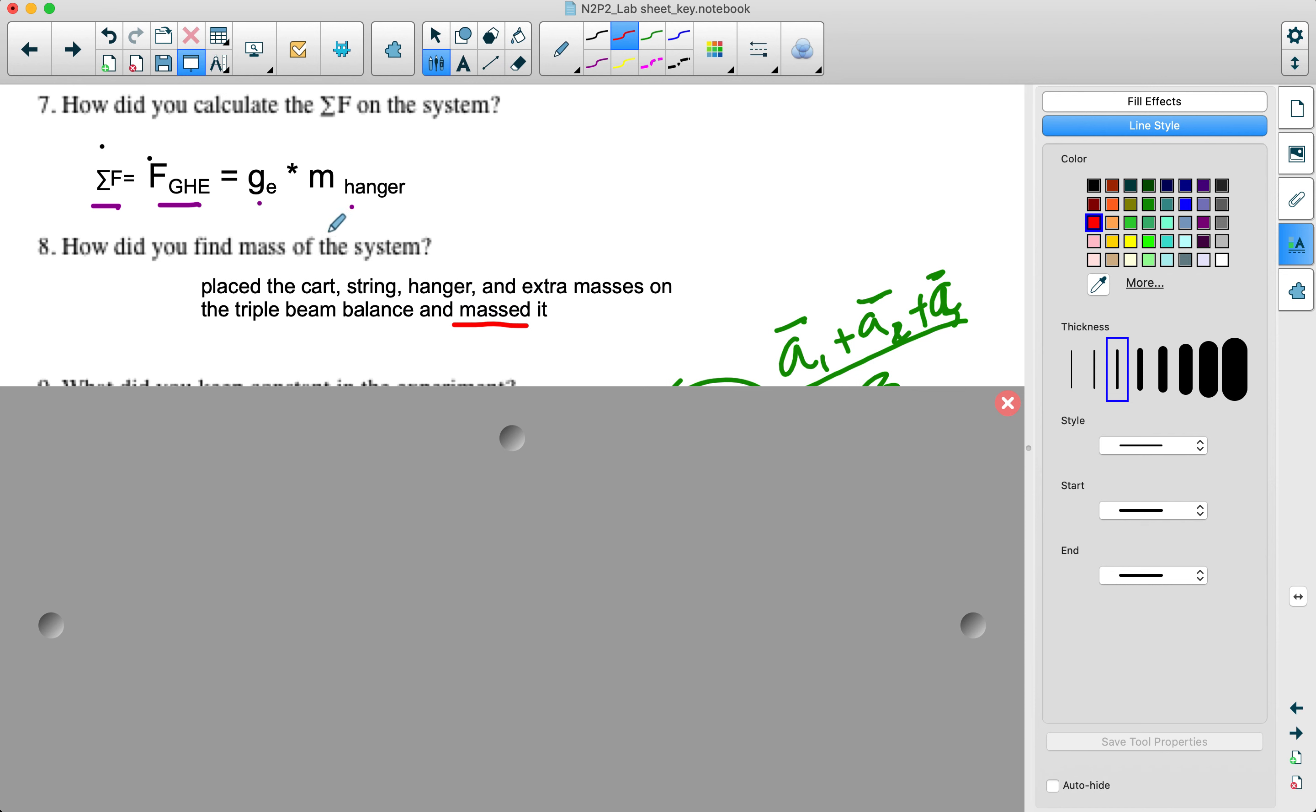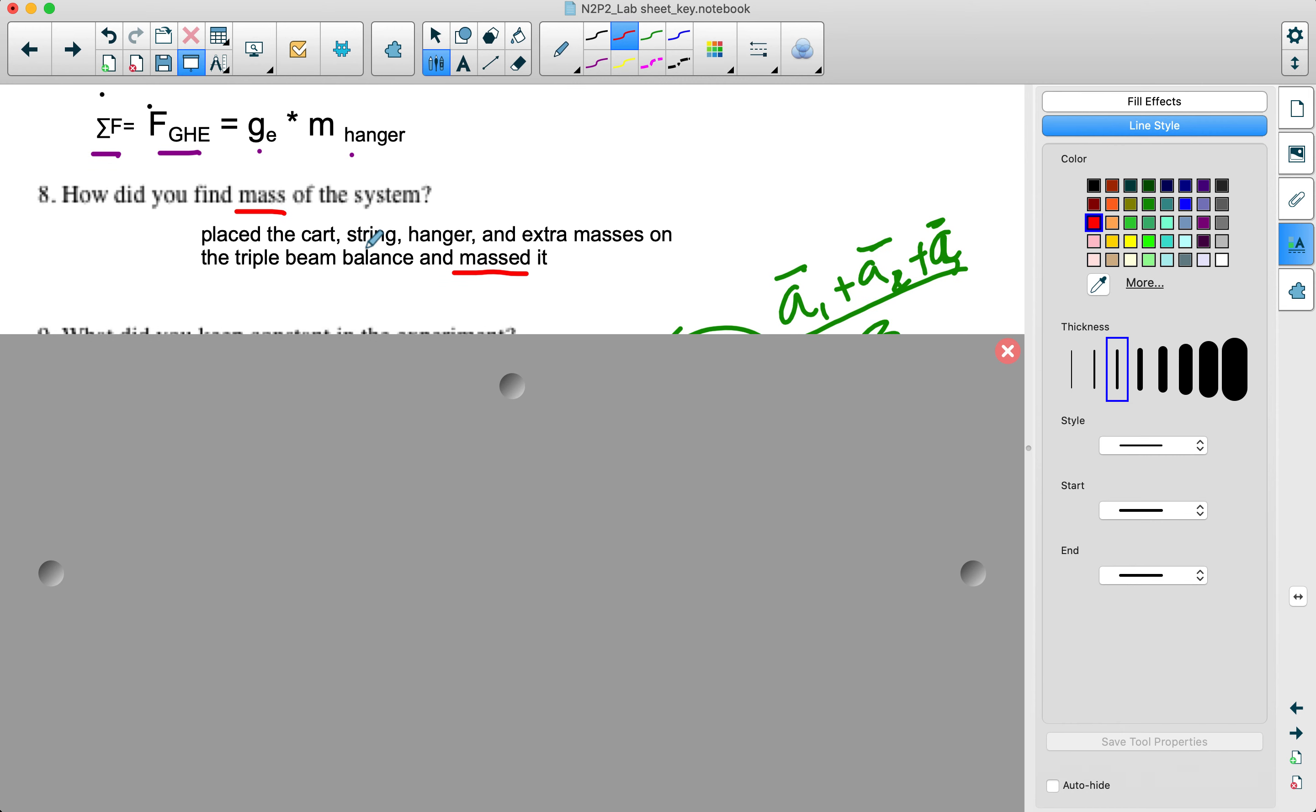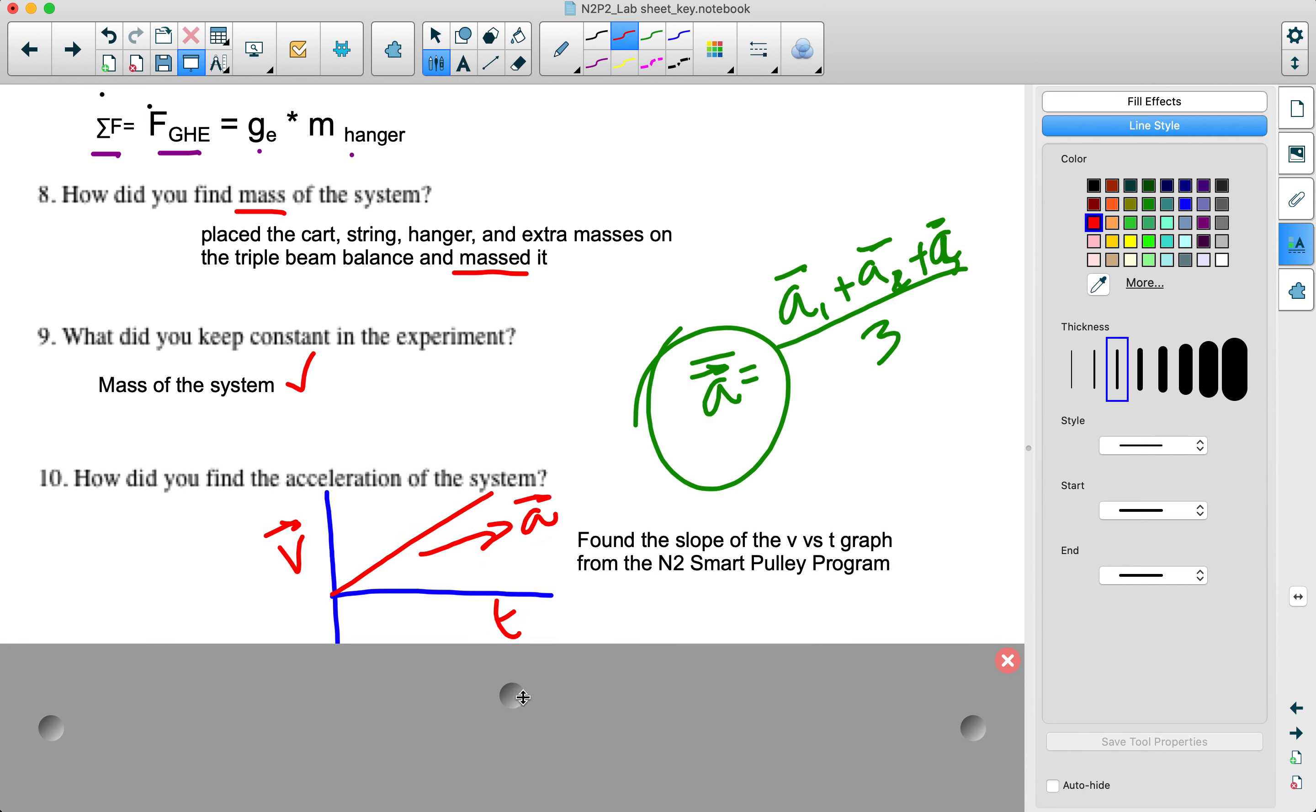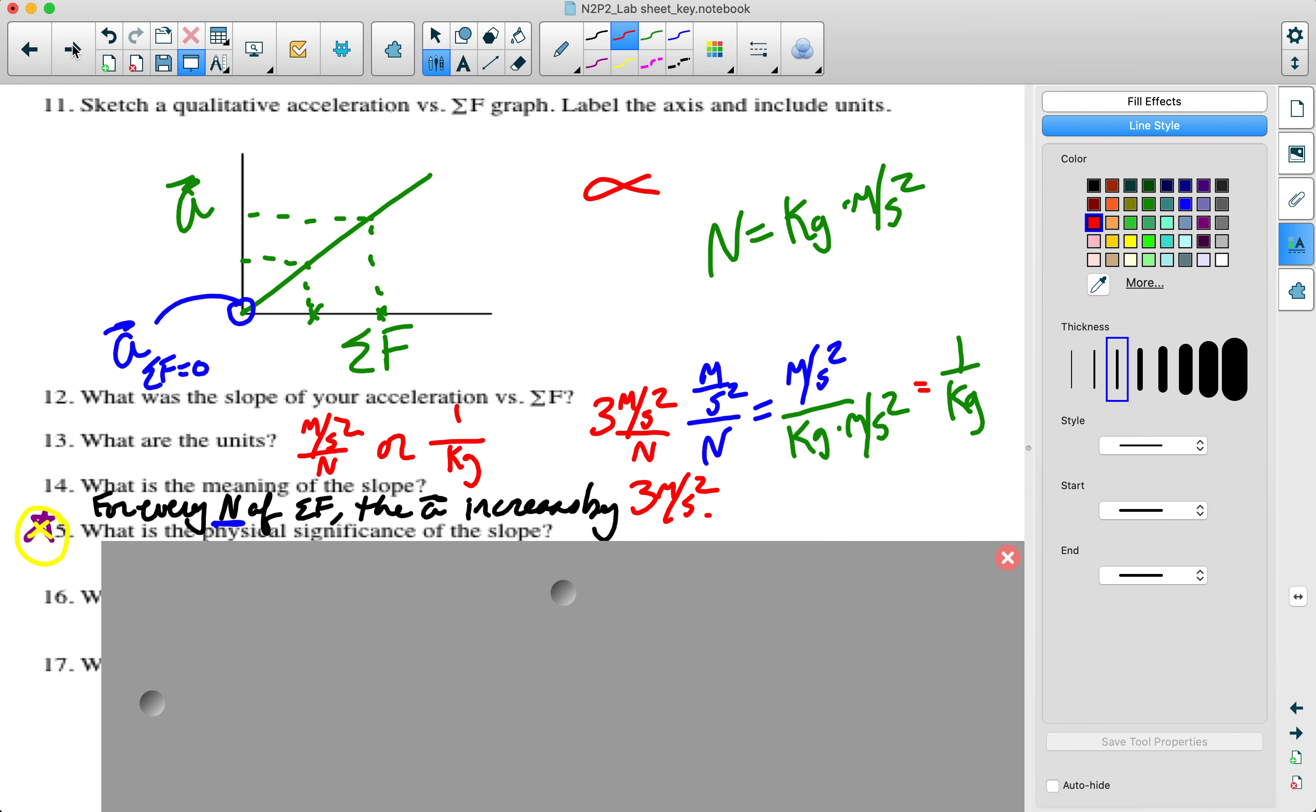Make sure that you say that you massed it. Do not use the term weigh it, because we're trying to find the mass, not the weight. And as you guys know, mass and weight are not the same things. What did you keep constant in the experiment? We did not change the mass of the system, by including all the masses in the system beforehand. How did we find the acceleration of the system? We used the N2 smart pulley program to build a velocity versus time graph, and the slope of the velocity versus time graph gave us the acceleration. We then took the three accelerations from the similar net forces and then found the average of those.